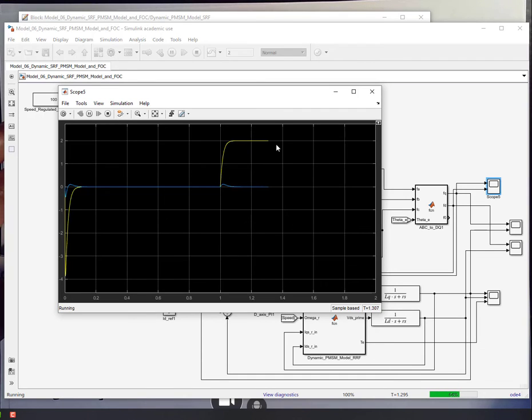And then the ID reference is zero. So that's being maintained at zero. This slight transient is due to the cross-axis coupling, because as soon as IQ is changing, the d-axis experiences some change in voltage. So it's going to try to compensate by adding voltage from the inverter side.